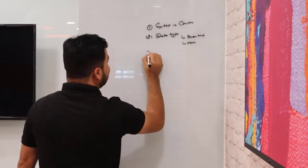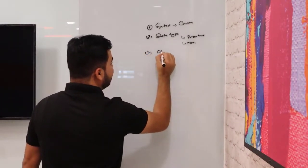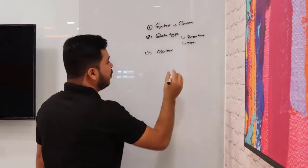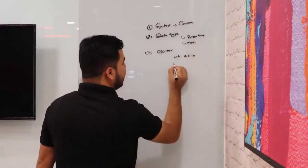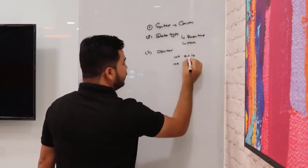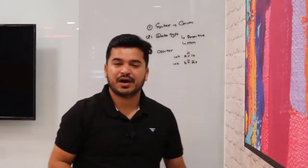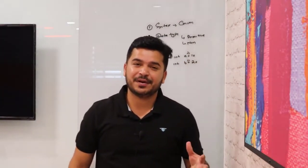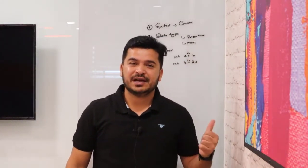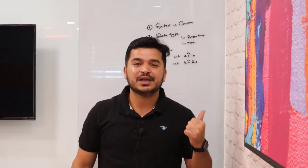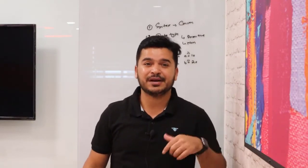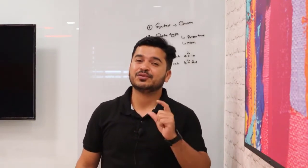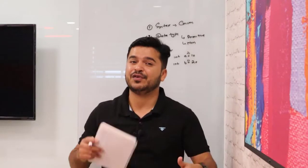Once you understand data types, you need to start with operators. For example, if you have int a = 10 and int b = 20, you can see these are operators — this is an assignment operator. We have different categories of operators in Java: equal to, double equal to, not equal to, less than or equal to, greater than or equal to, logical operators, and binary operators. You need to understand the different kinds of operators and when to use what.